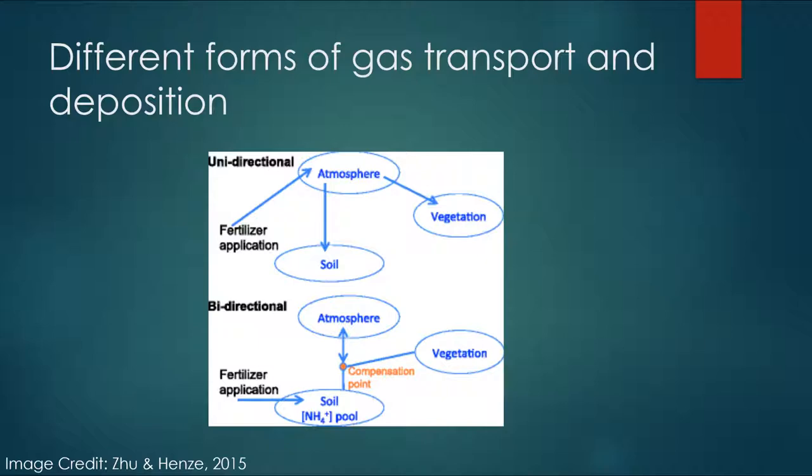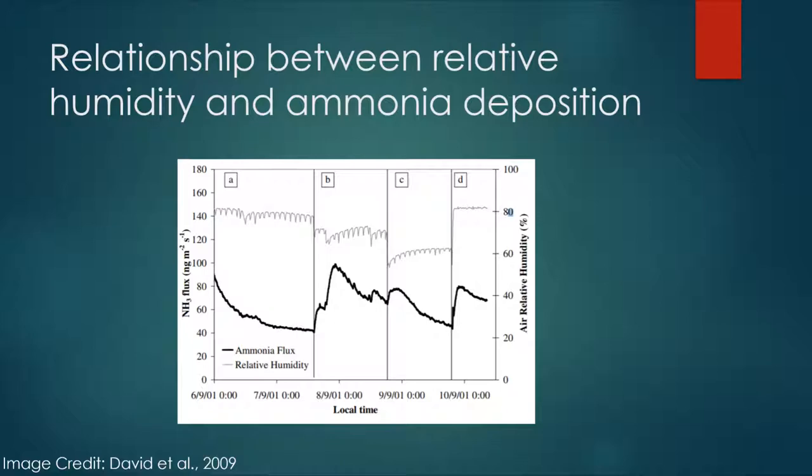There are a couple of reasons this information relates to physical geography. The first reason is the way ammonia is transported — it is released into the atmosphere and by way of prevailing winds and different weather patterns, it is dispersed throughout the atmosphere and around the world. The second major reason this connects to physical geography is the way the atmospheric conditions react with the gases in the atmosphere.